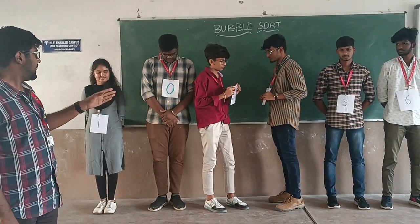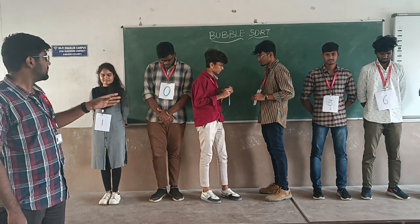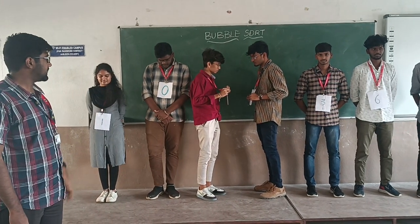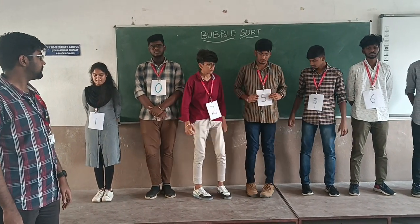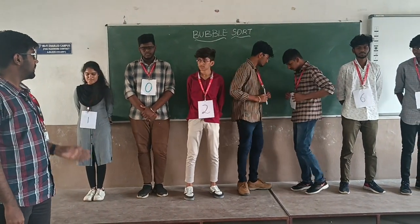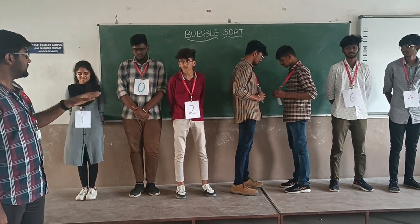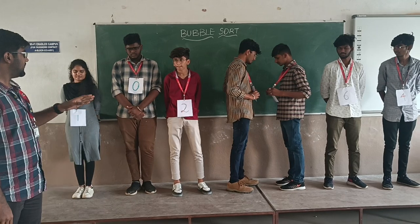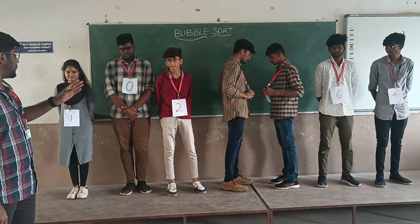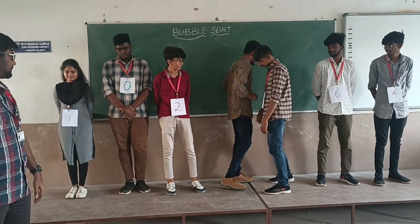2 and 5 is compared. 5 is greater, so no swapping takes place. Then 5 and 3 is compared. 3 is lesser, so swapping takes place.